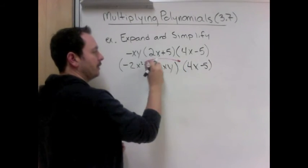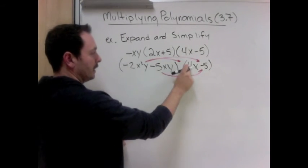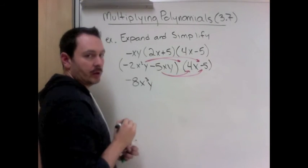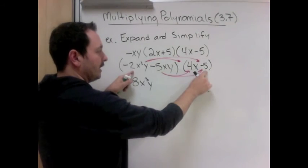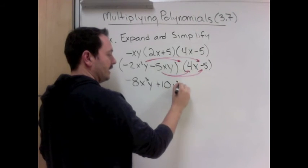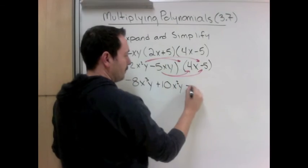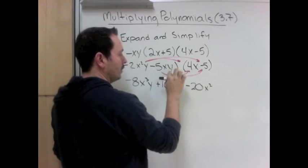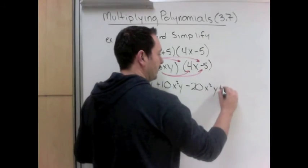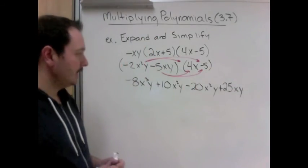And now we can multiply it by the second part. So this one needs to multiply both, and then this one needs to multiply both. So negative 2 times 4 is negative 8. x² times x is x³. y times no y means we just have 1y. Now this all needs to multiply negative 5. Negative 2 times negative 5 is plus 10. x²y just stays the same. And now the second part needs to multiply both. So I get negative 5 times 4 is minus 20. x and an x is x². y and nothing is y. And now this one needs to multiply the last one. Negative 5 times negative 5 is plus 25xy. There's nothing left here, so the xy stays.